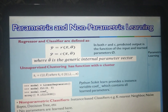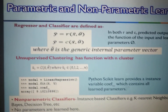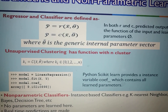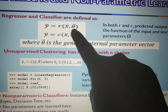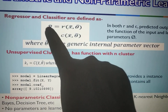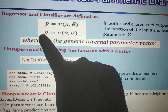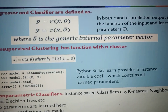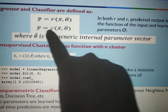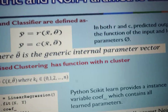The next important concept in machine learning is parametric and non-parametric learning. A regressor R converts input x into output y — y is predicted from x. Similarly, a classifier C also takes x as input and predicts y. These predicted outputs depend on the input x. The bar notation indicates that the input is a vector, since each input pattern is a set of attribute values.